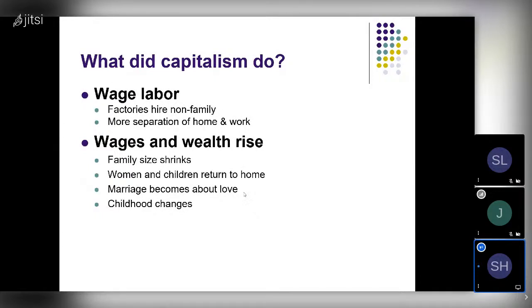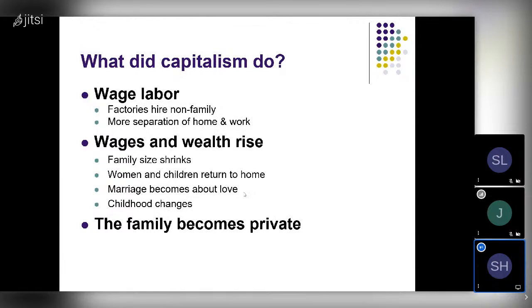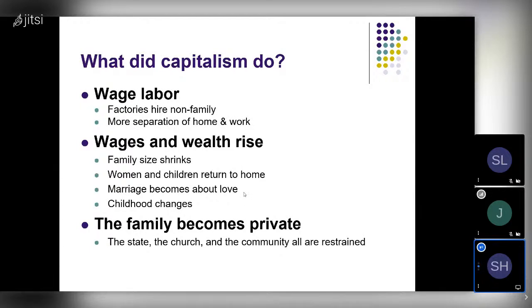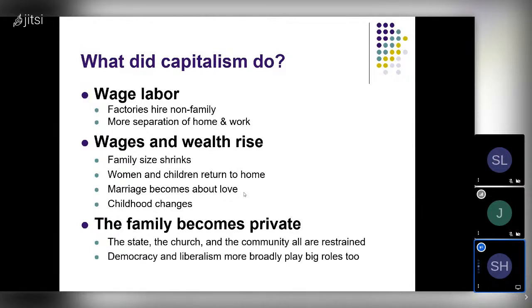The images of the Victorian family of the late 19th century — this is where it all originates, in the changes capitalism brought about. Finally, the family becomes private: the state, the church, and the community are all restrained. Democracy and liberalism more generally have a lot to do with this — the separation of church and state, limits on state power — and the community is pushed back as adults establish their claim to decide who they want to marry and how to structure their lives. The community plays an increasingly smaller role in those decisions.